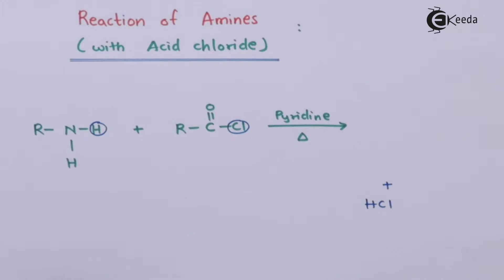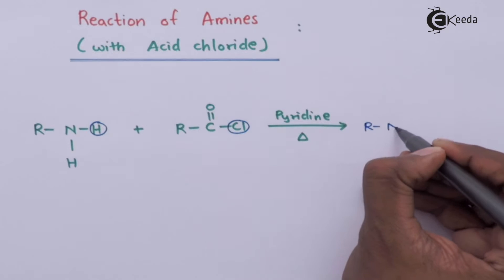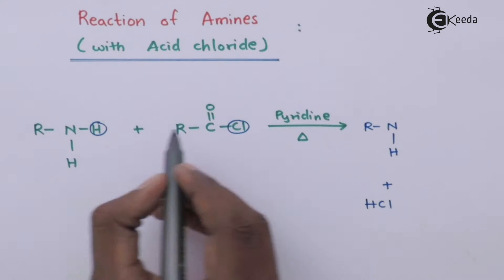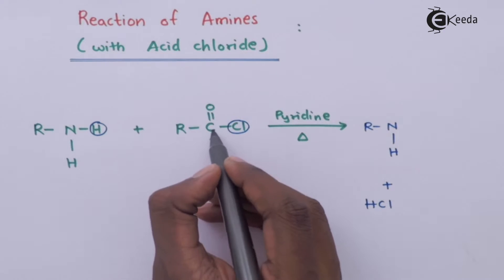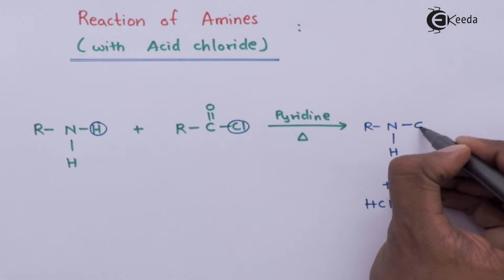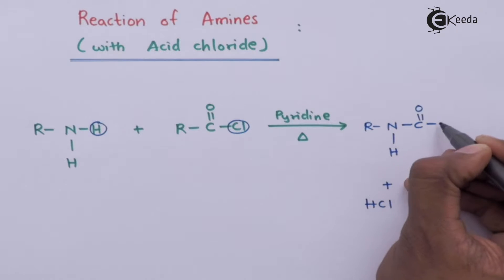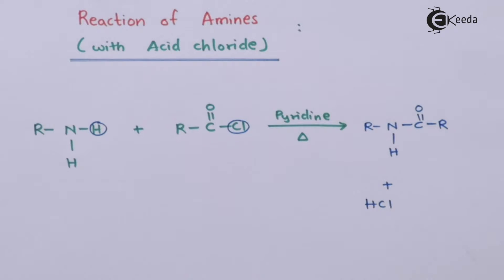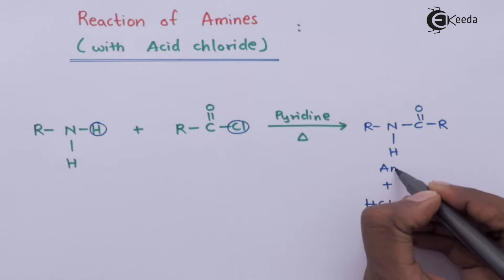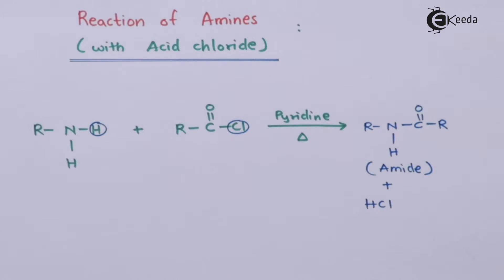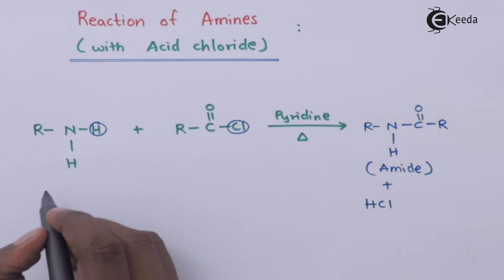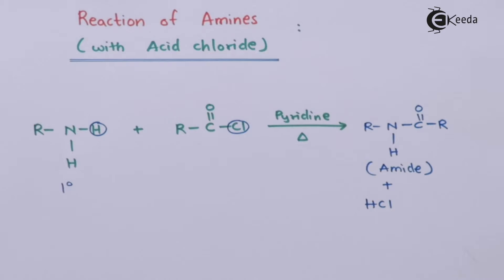The main product that is left is RNH — with the bond attachment being C double bond O and R — written as C=O–R. The name of the product we have obtained is known as an amide. This is how we can prepare an amide from primary amines by treating them with acid chloride.